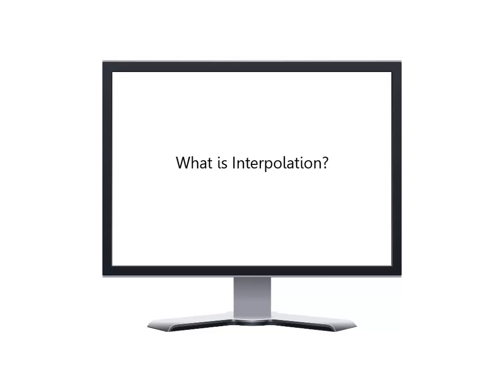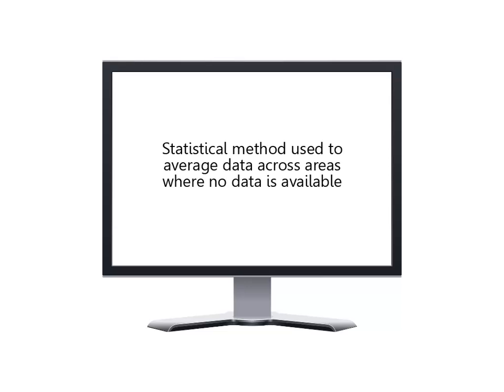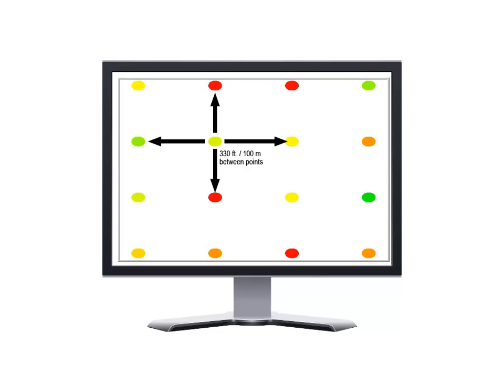Let's begin with the definition of interpolation and when it's used in SMS. Interpolation is simply a statistical method used to fill or average data across areas where no data is available, based on the data points that surround the gap. For example, when working with a soil sampling map where a point only exists every 2.5 acres, SMS uses interpolation to fill those areas around the site.